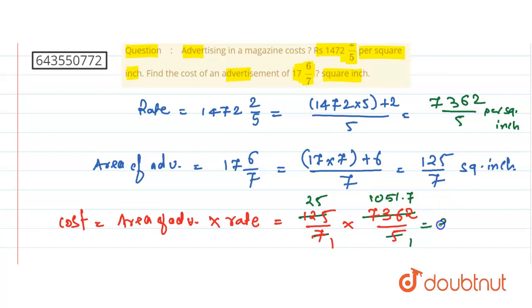This is 25 into 1051, and that total cost is, if we take the multiplication, 26,292.85 rupees.